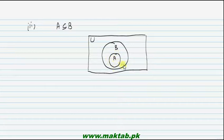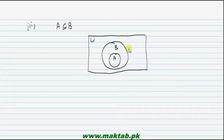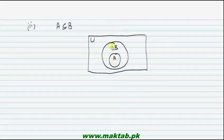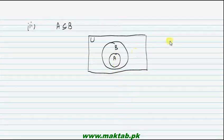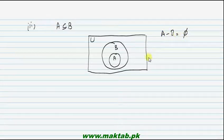Now we need to find A minus B and B minus A. For A minus B: is there any region in A that is not in B? Since A lies completely inside B, there is no element in A that is not in B. Therefore A minus B is equal to the empty set.